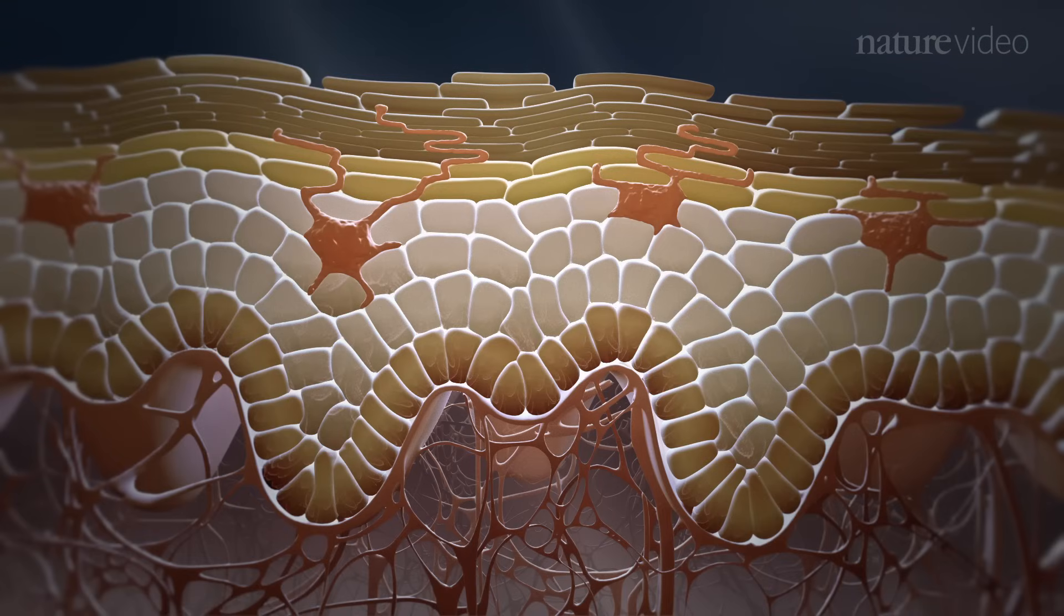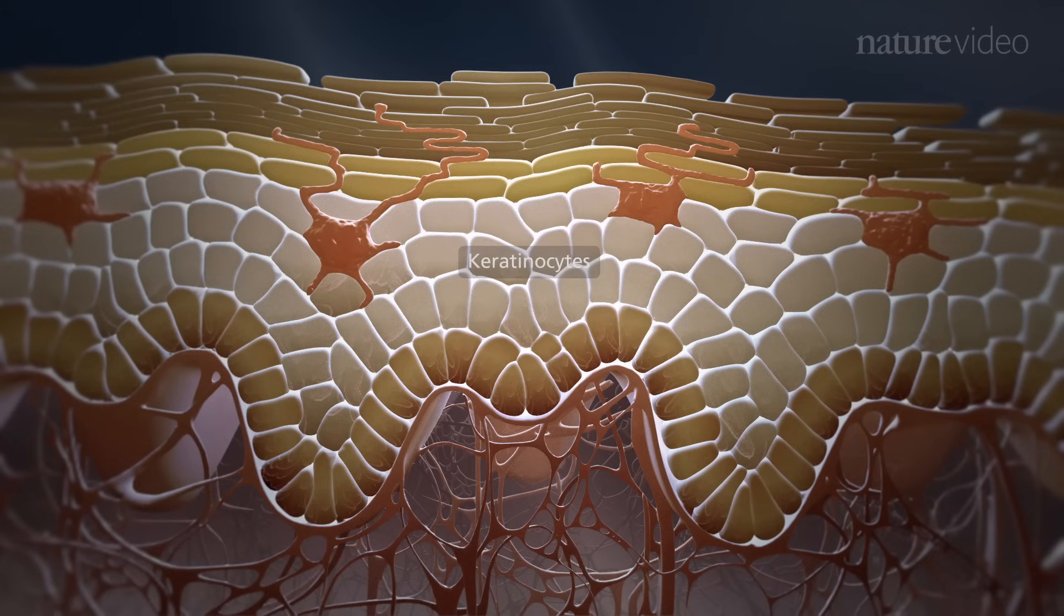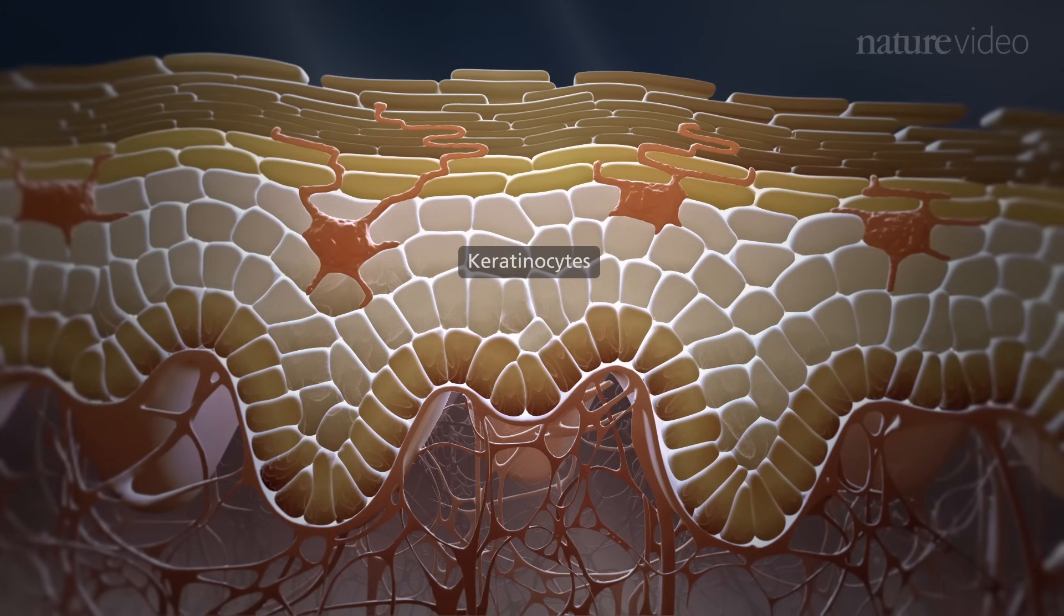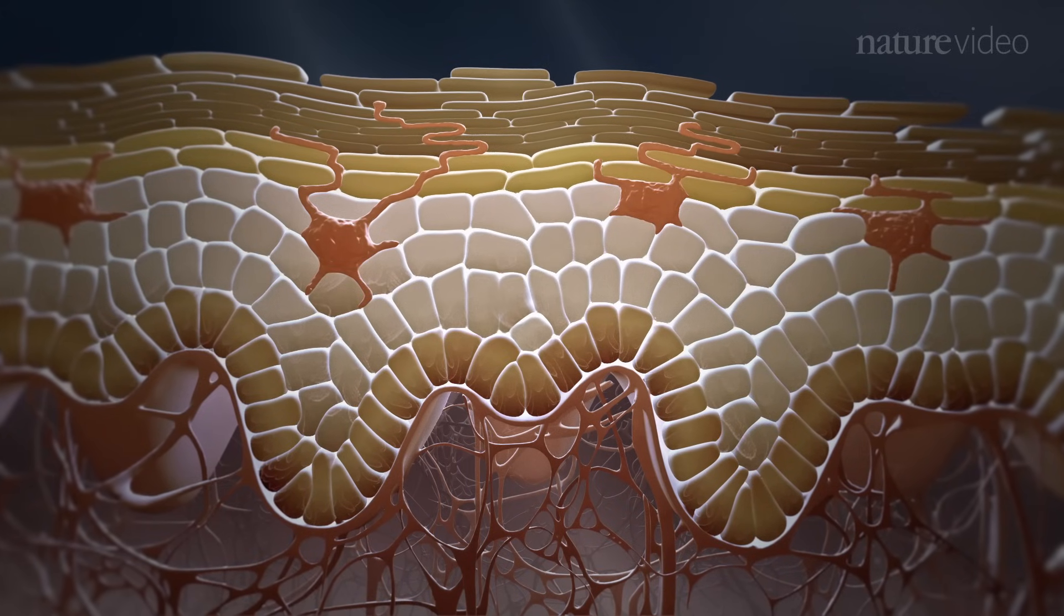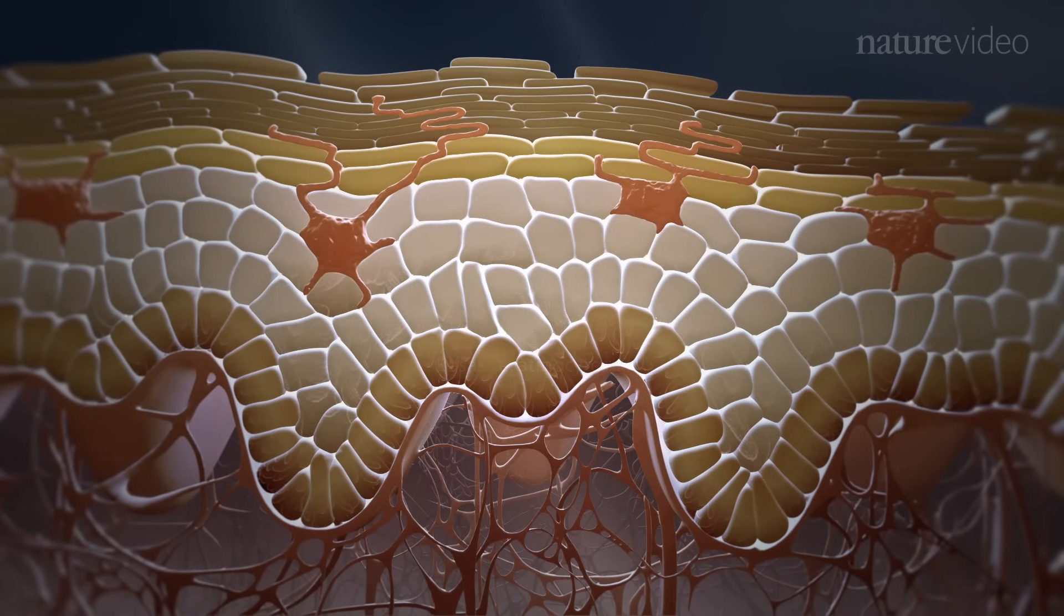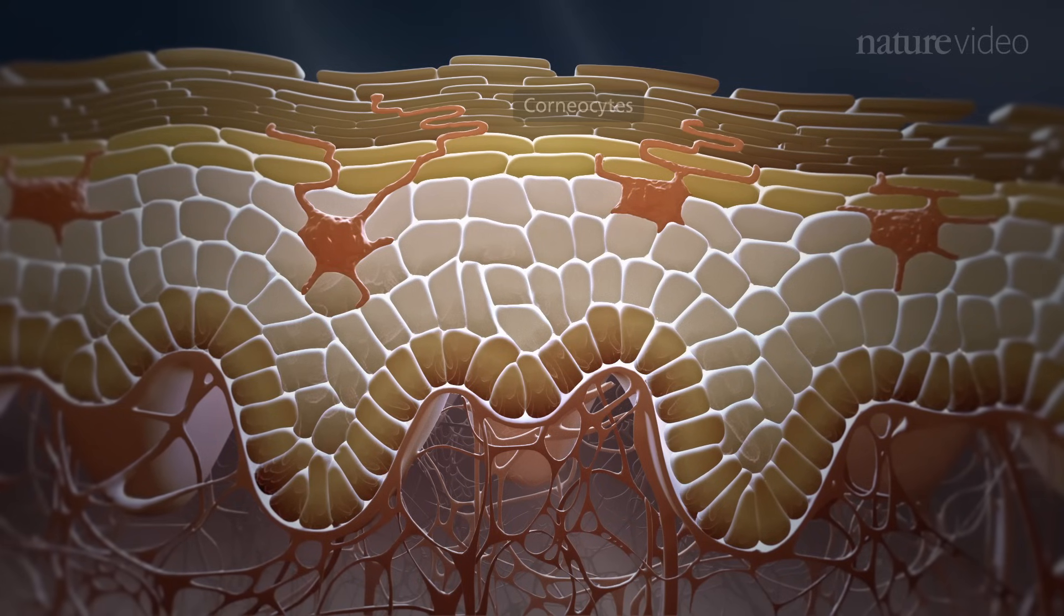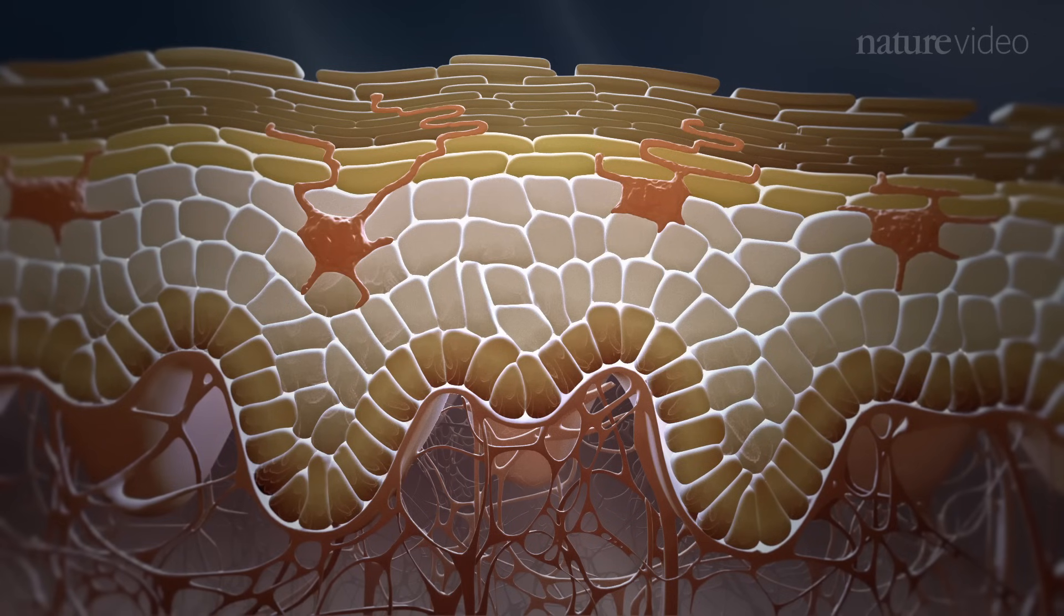The epidermis is composed of highly specialized epithelial cells known as keratinocytes. They are continuously replenished from just one layer of basal keratinocytes, which divide frequently. Dead cells called corneocytes form the outermost layer and are largely responsible for the barrier function of the skin.